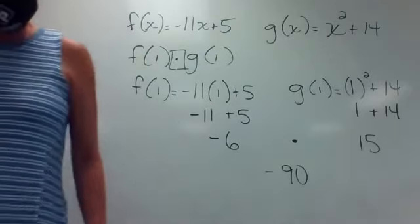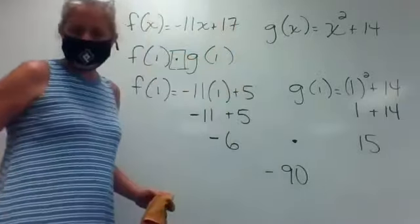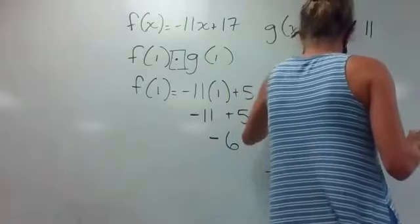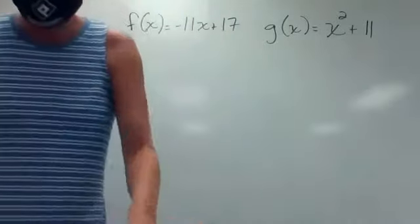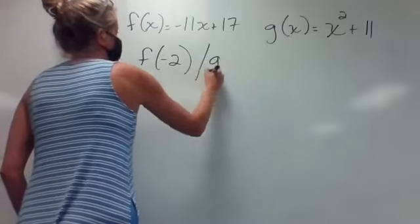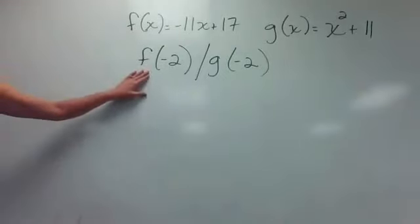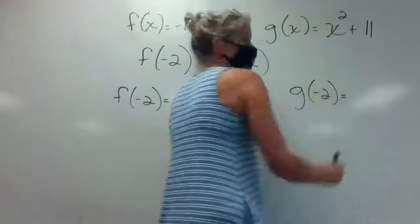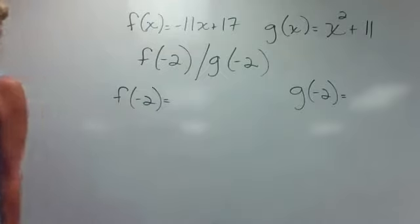Number seven is the same kind of thing. f of x is negative 11x plus 17, and g of x is x squared plus 11. This time it wants us to find f of negative two over g of negative two. So I'm going to find f of negative two, get an answer, also find g of negative two, get its answer, and then put the f solution over the g solution.